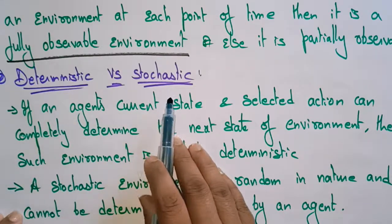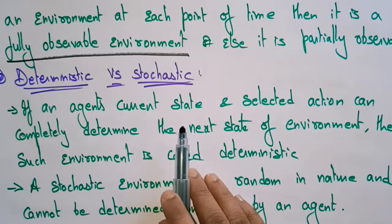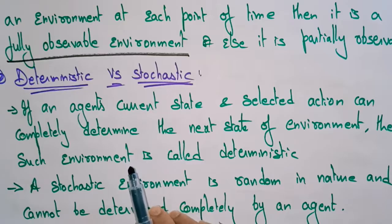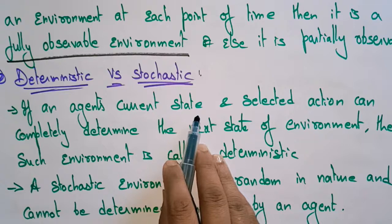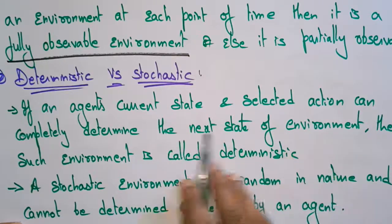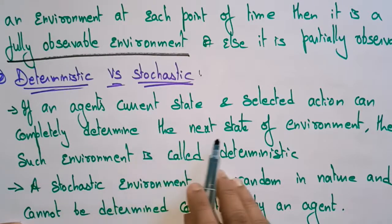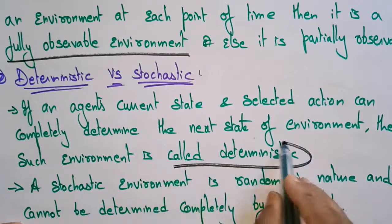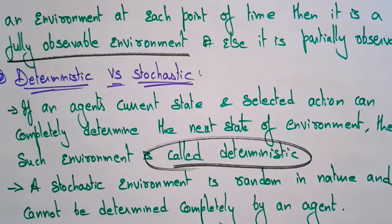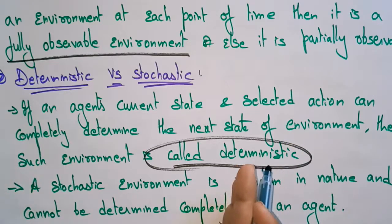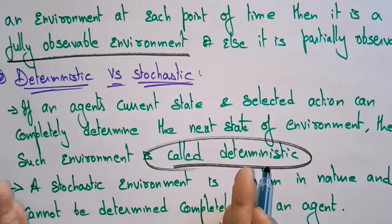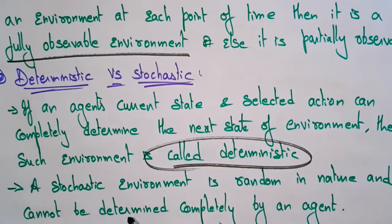Deterministic versus stochastic — this is in the view of the agent about the environment. If an agent's current state and selected action can completely determine the next state of the environment, then such an environment is called deterministic. Whenever the current state is able to determine the next state, we say it is deterministic — the agent is strict to that point and can see the current status as well as the next state.